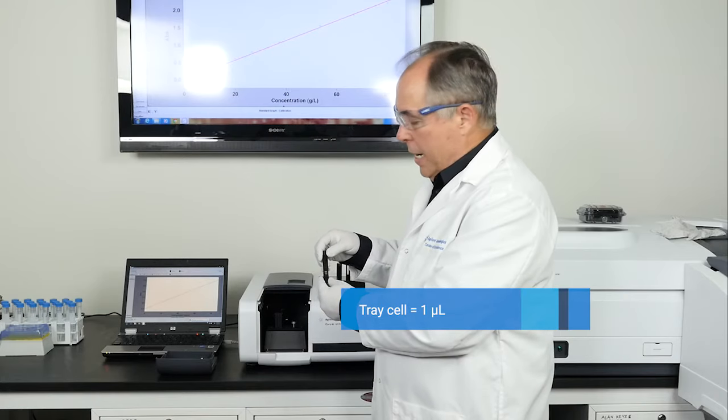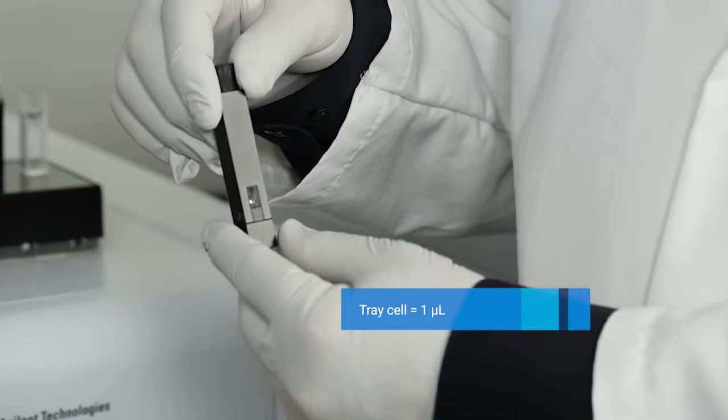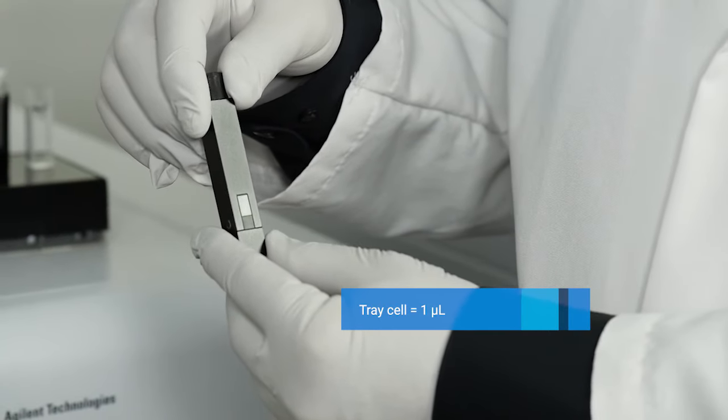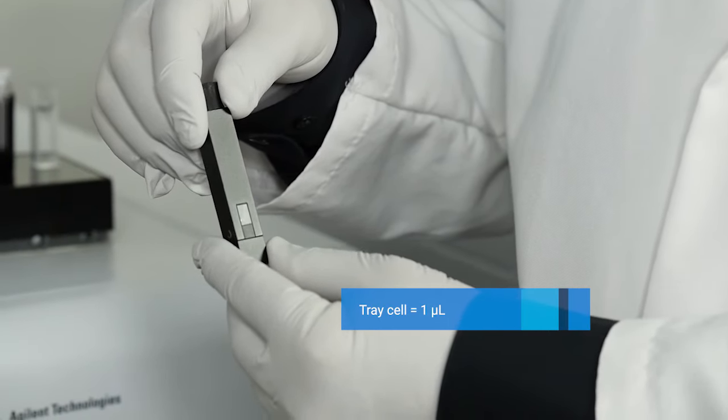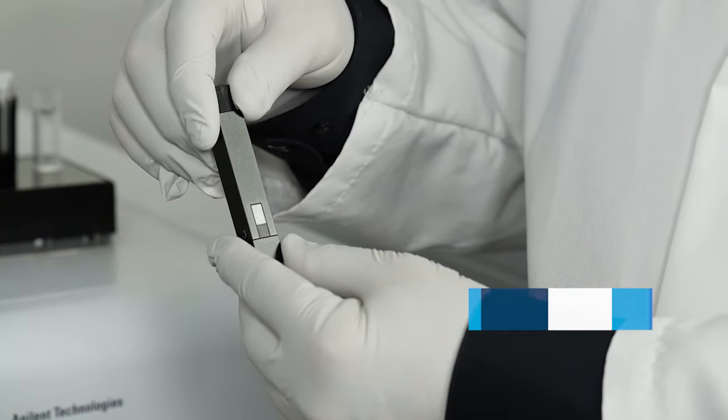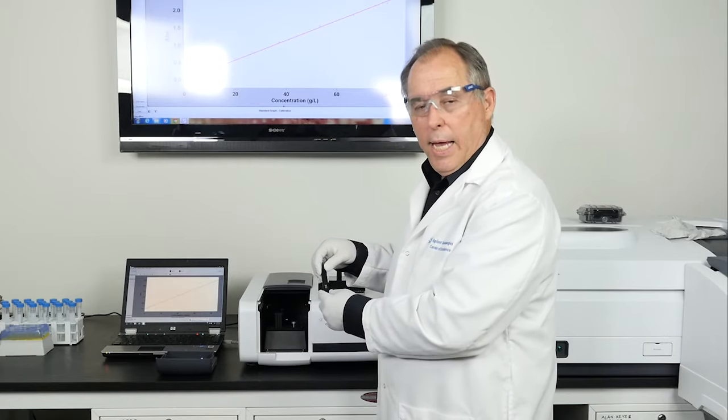The fourth cell type I'm going to measure is called a tray cell that measures one microliter sample and can determine both the concentration and the purity of the nucleic acid if that's what you're measuring. So we'll place it in the sample compartment and see how much energy we can get through with this arrangement.